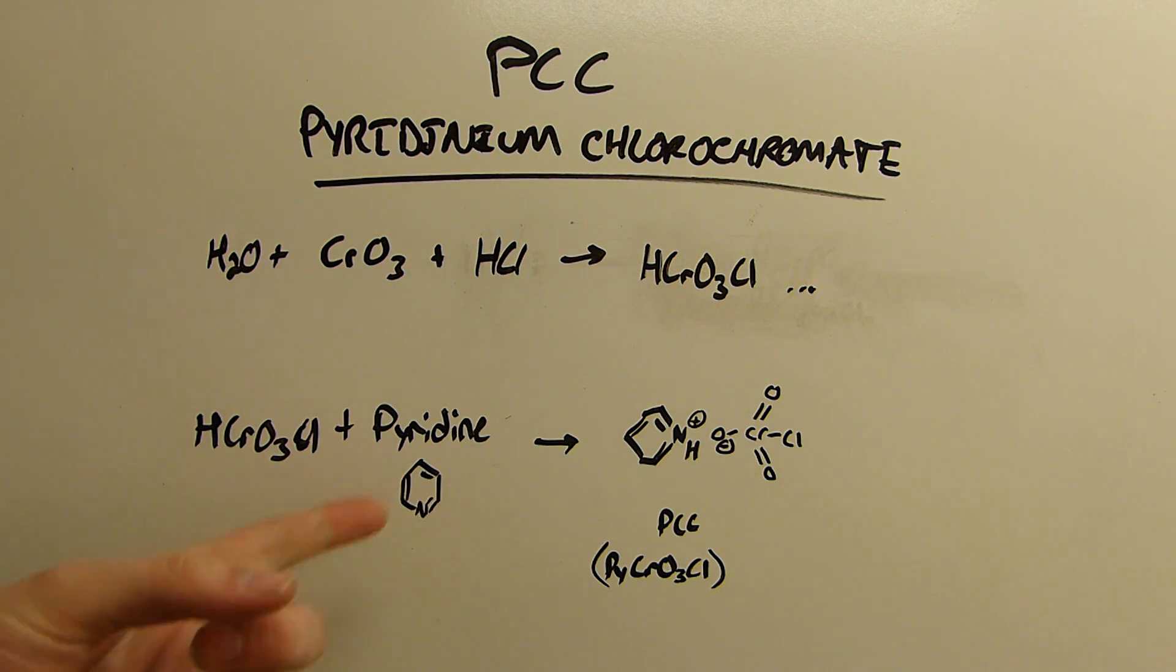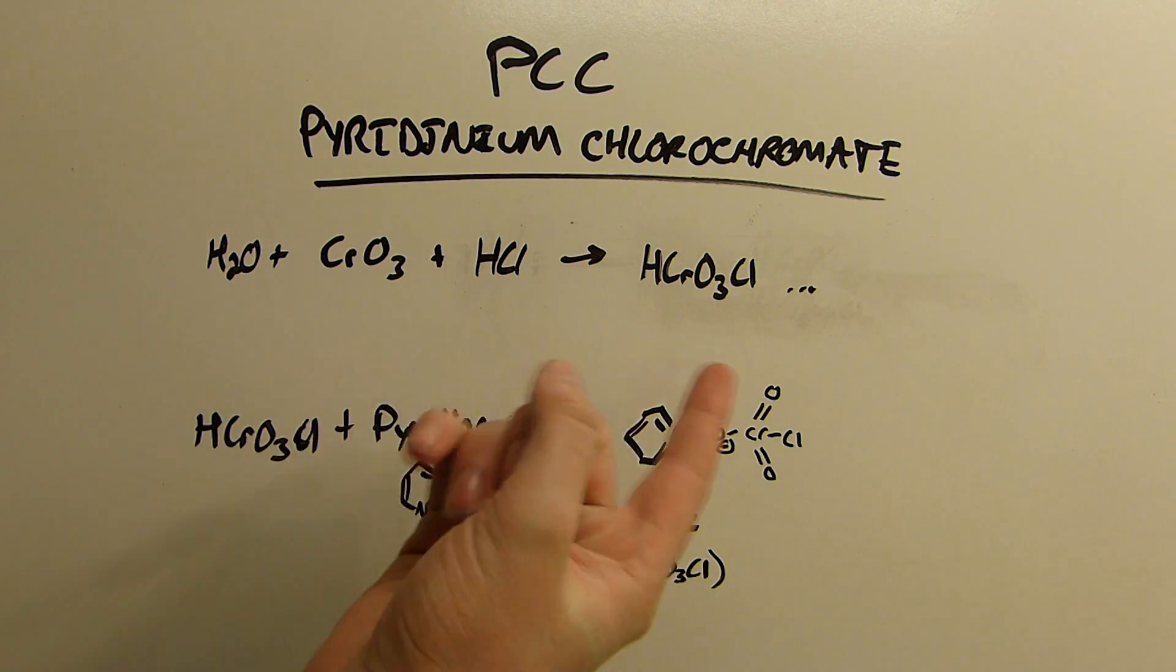It's simply the pyridinium salt of chlorochromic acid as you can kind of tell by this diagram here. So first we're just going to have to form some chlorochromic acid, fairly simple.